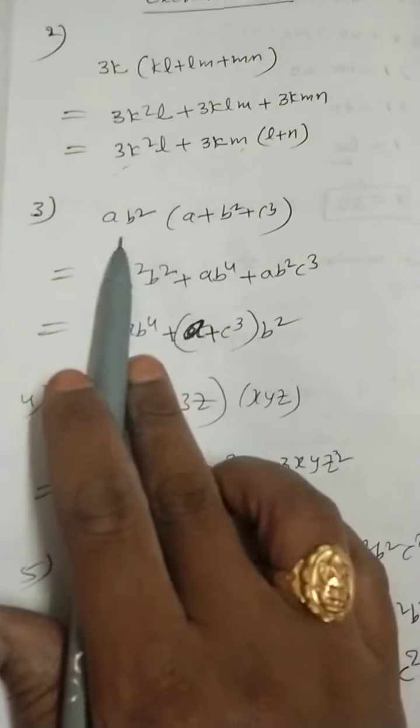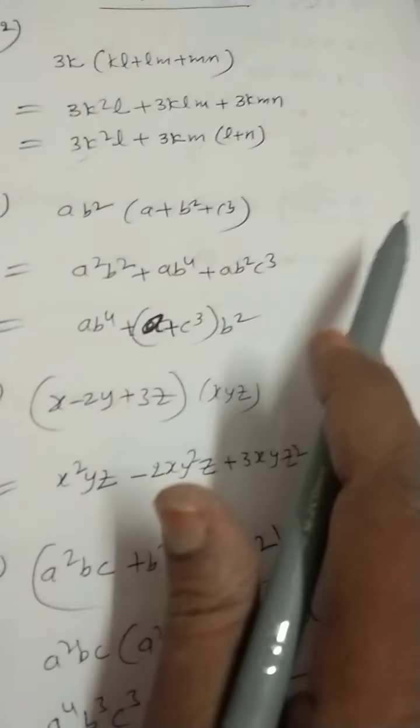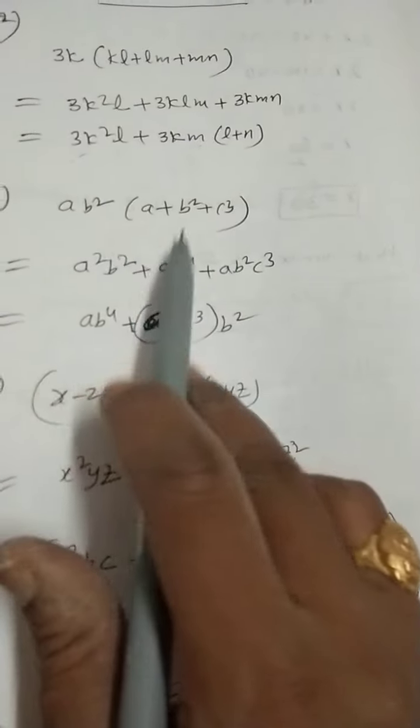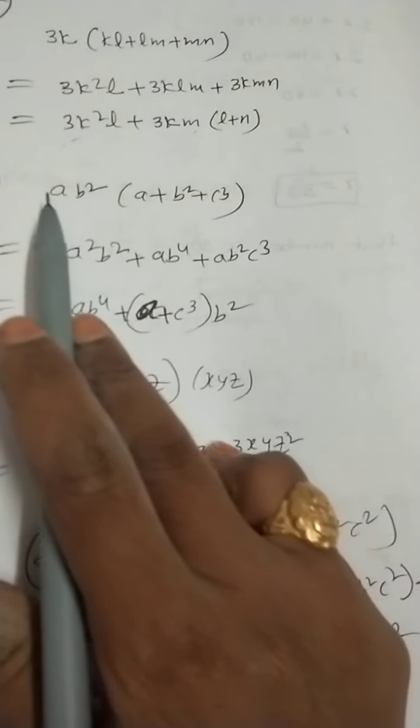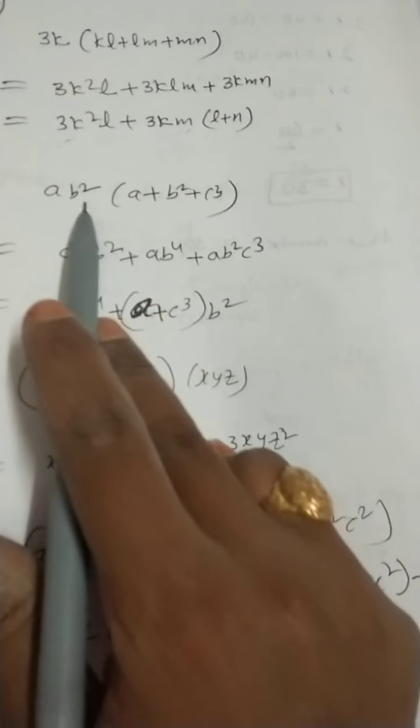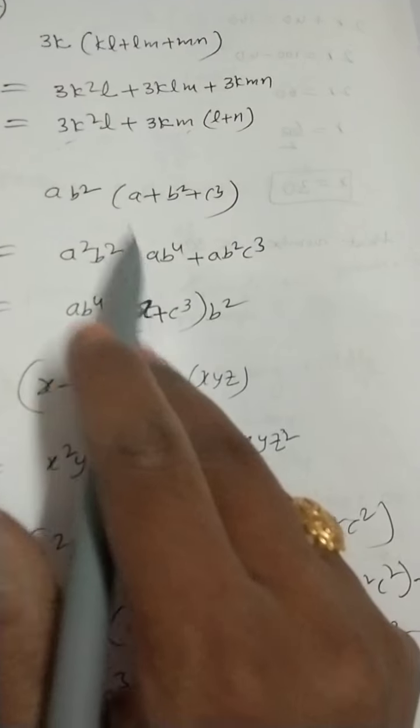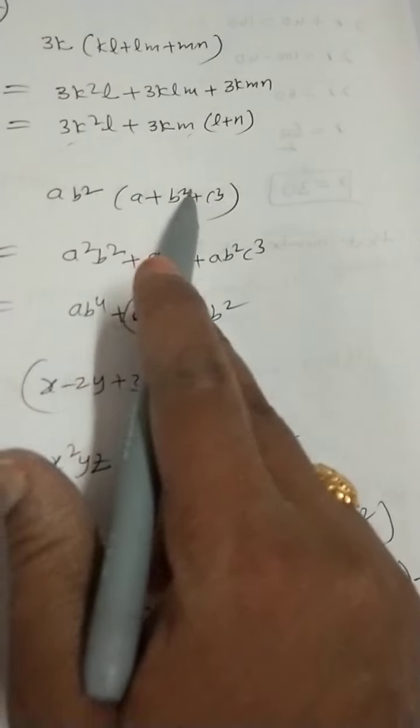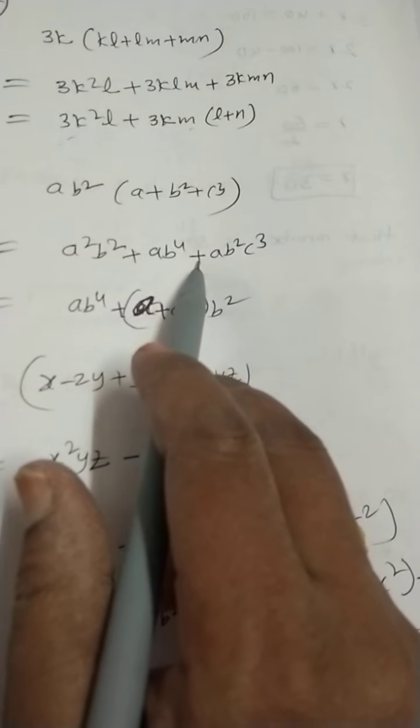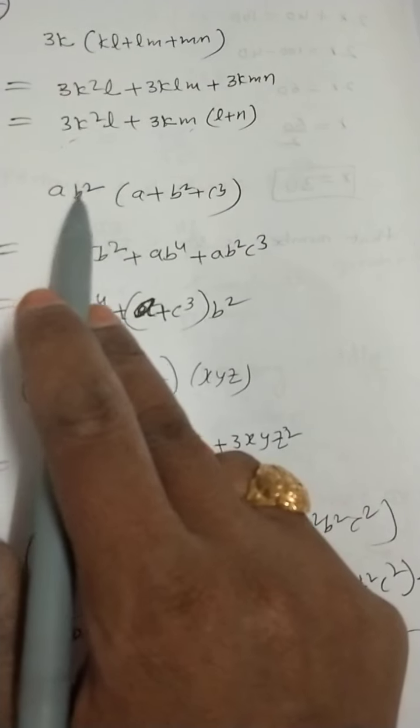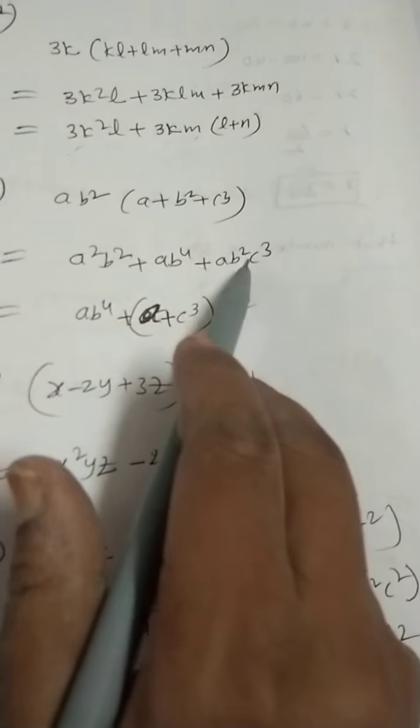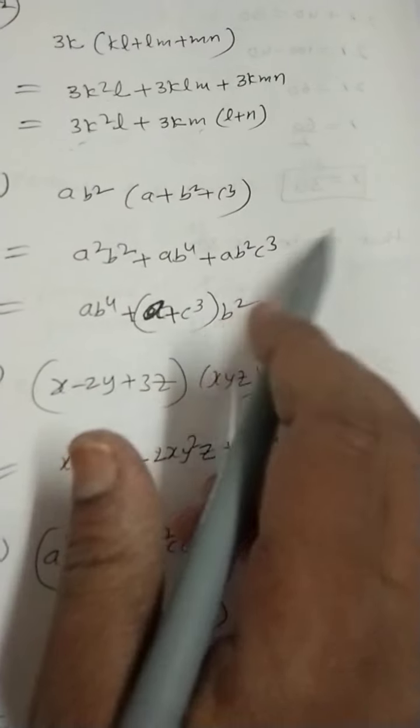Next, third one. This is the first expression. This is the second expression. We are finding the product. So, now, here, a into a is a square b². Plus, here, a as it is, b² into b² is b power 4. Plus, here, ab² as it is, into c³.